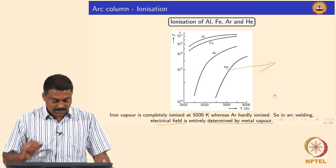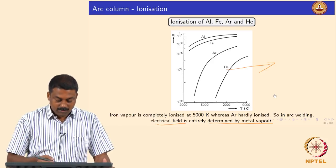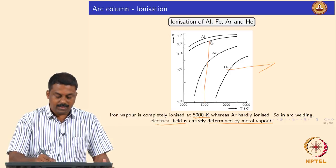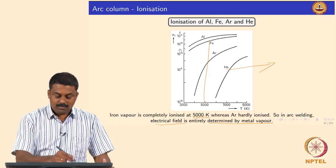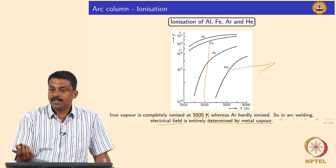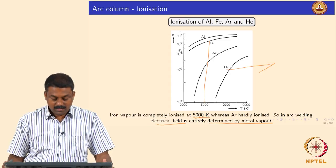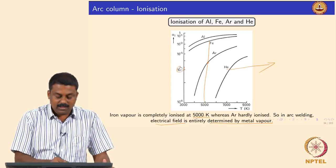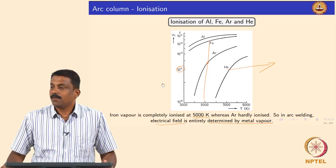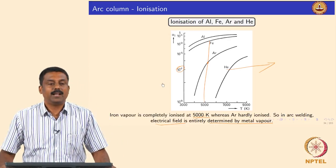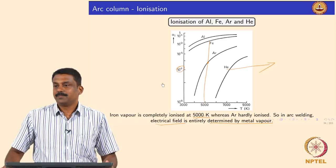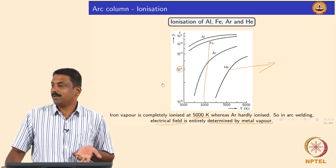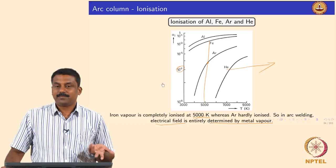Looking at the graph at 5000 Kelvin, you will see that iron vapor would completely ionize, whereas argon at that temperature is hardly ionized — on the order of 10⁻⁷, very few atoms are ionized. So what is rate-controlling here is the metal vapor — the iron vapor.